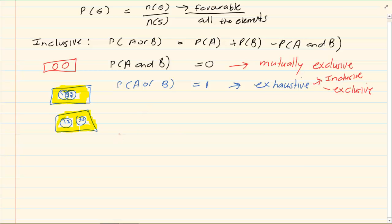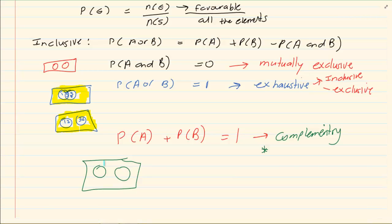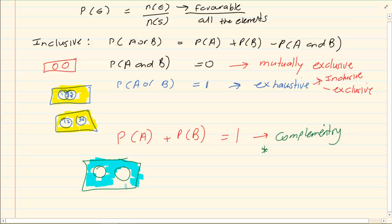Then you have an event where we have P of A plus P of B is equal to 1. Now this is the complementary event. Now the complementary event means it does not touch and it has no other elements outside. So the complementary event has to be exclusive and it has to be exhaustive.